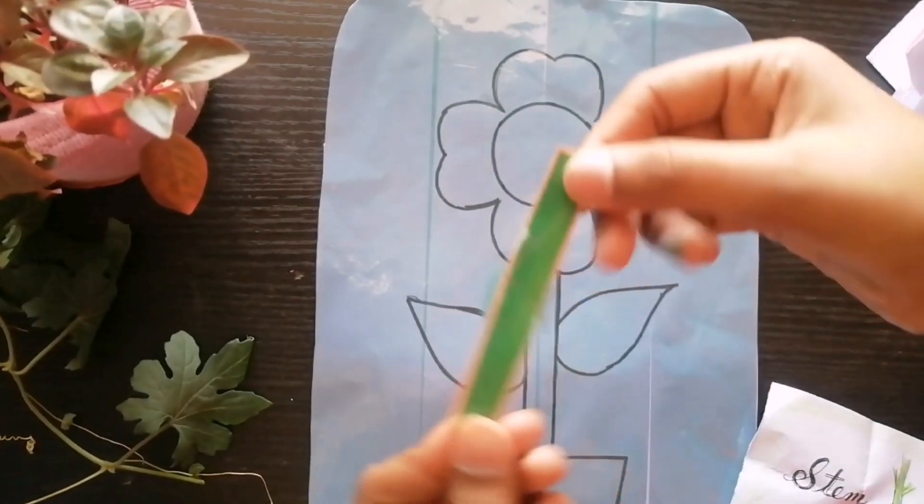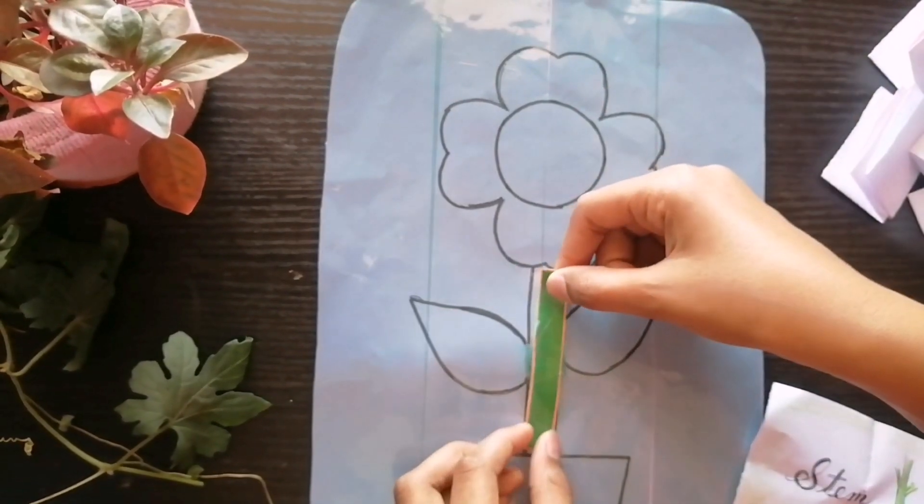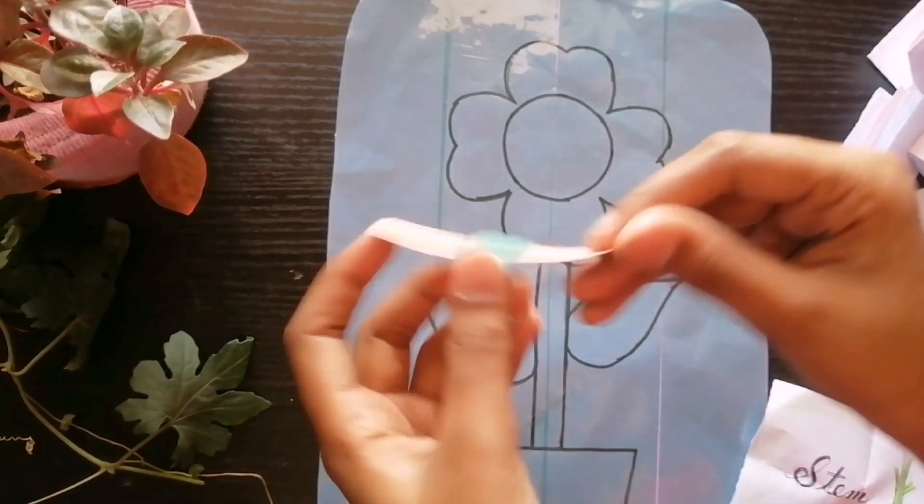Stem is the strong part and helps hold the plant. It allows water and nutrients to flow up to the leaves.